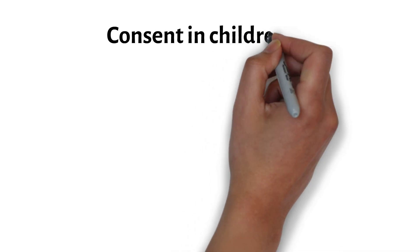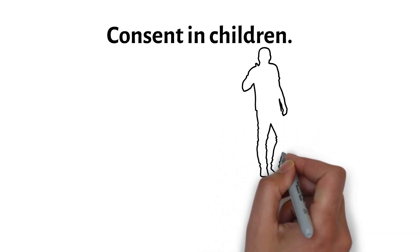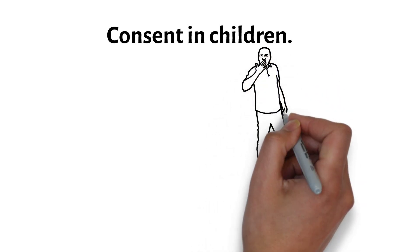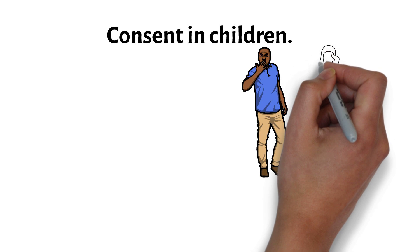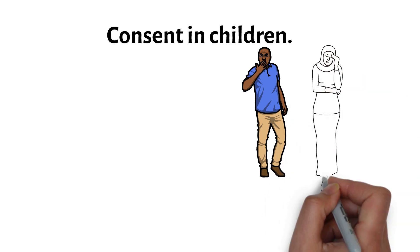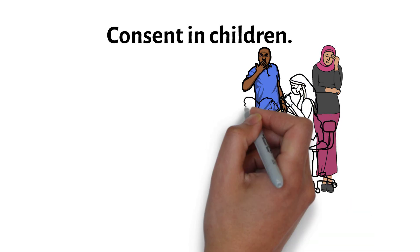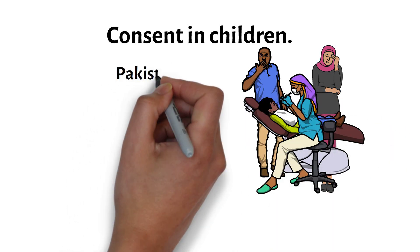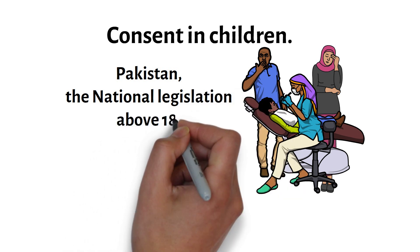Regarding consent from children: in every country the law decides the age after which consent can be given by the child. In cases where the child has not reached that age, consent is given by the parent or legal guardian — not just somebody accompanying the patient. In Pakistan, the national legislation sets the age of consent as above 18 years, as defined by the Pakistan Penal Code Child Abuse Amendment Act, Article 377A. There may be exceptions — for example, the healthcare provider can proceed if a child needs emergency treatment to save the child's life.